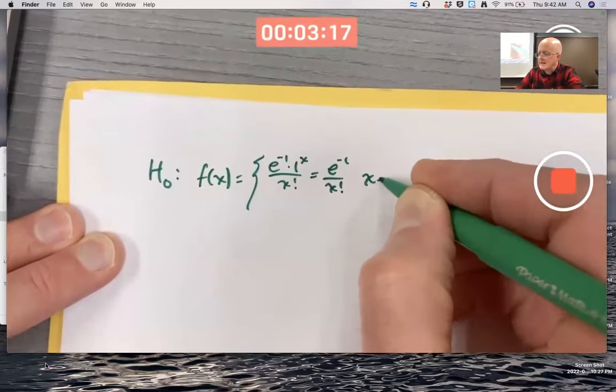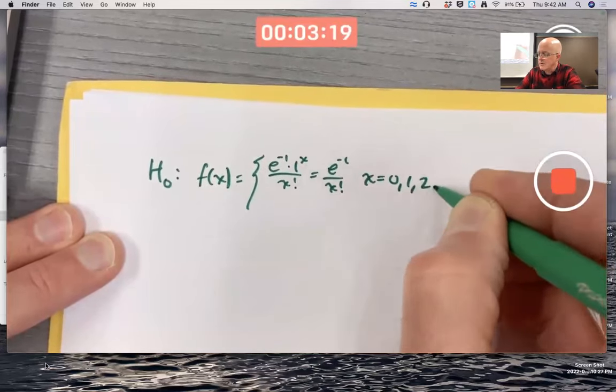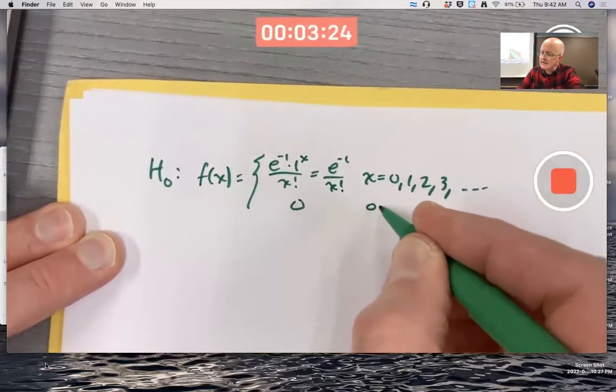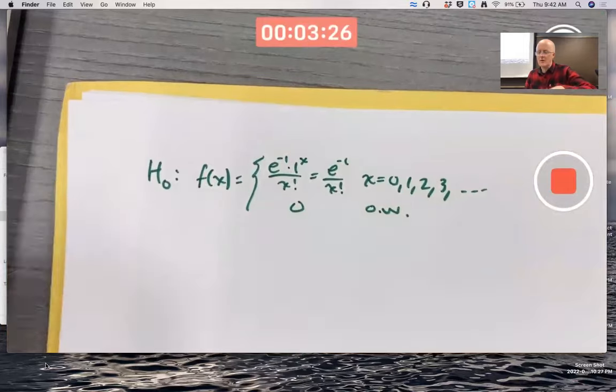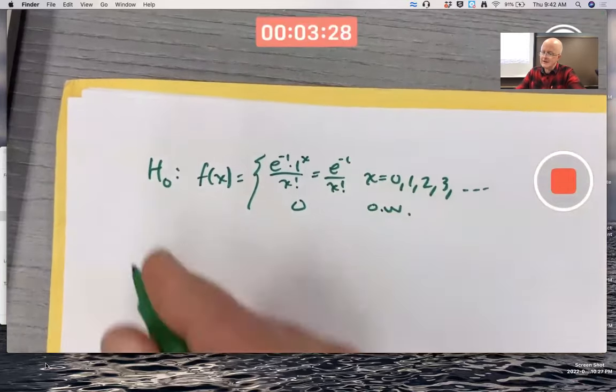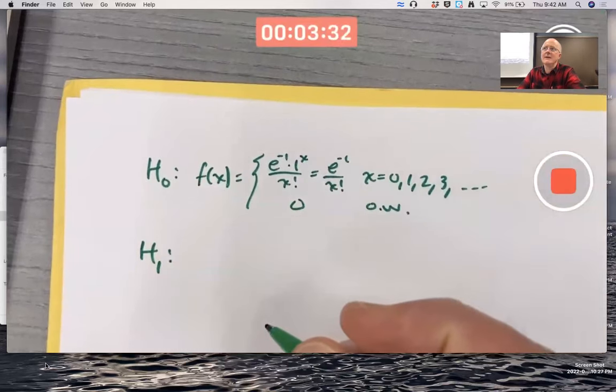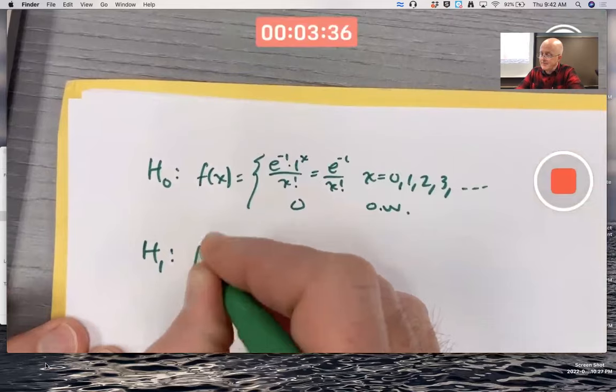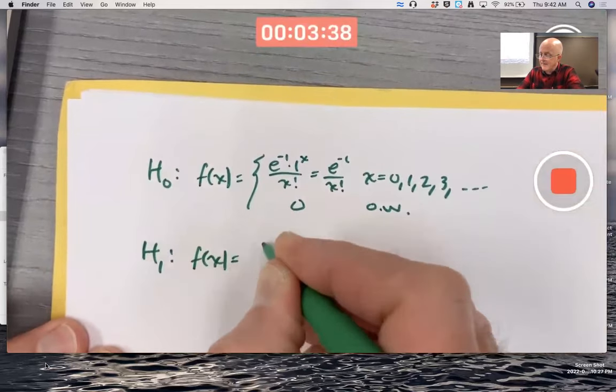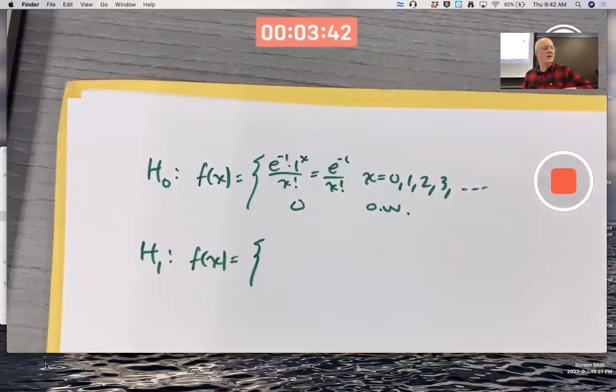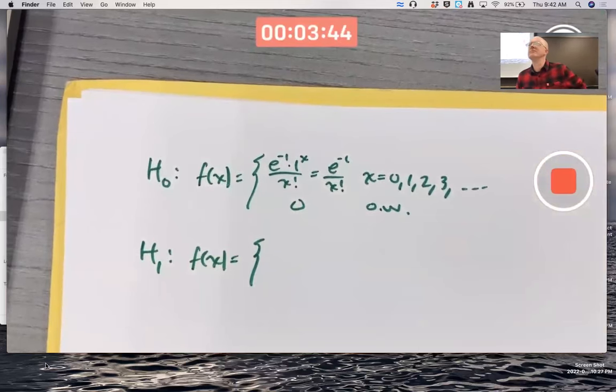When X is 0, 1, 2, 3, etc. And 0 otherwise. Or the alternative hypothesis is that the PDF is going to be something else, PMF I should say. Essentially, the PMF of what you might call a shifted geometric random variable.